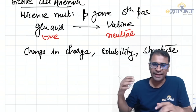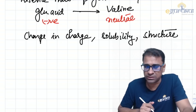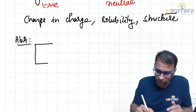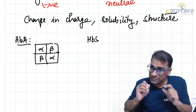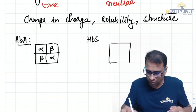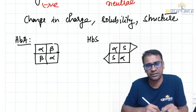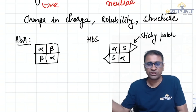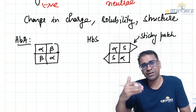Let's understand how the change in structure occurs in sickle cell anemia. A normal HbA molecule has two alpha and two beta chains. But in HbS, the beta chain has a sticky patch — not the alpha chain, which remains normal. The sticky patch means this hemoglobin can stick to the next hemoglobin if that next hemoglobin has a complementary patch for it.